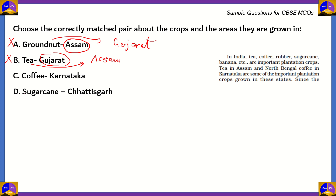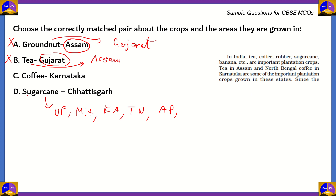What about option D — sugarcane in Chhattisgarh? Well, the main producers of sugarcane are Uttar Pradesh, Maharashtra, Karnataka, Tamil Nadu, Andhra Pradesh, Telangana, Bihar, Punjab, Haryana, etc. Chhattisgarh isn't on that list, so therefore option D is incorrect.